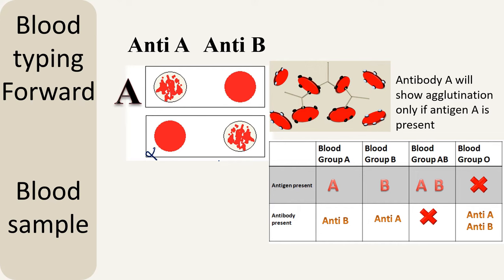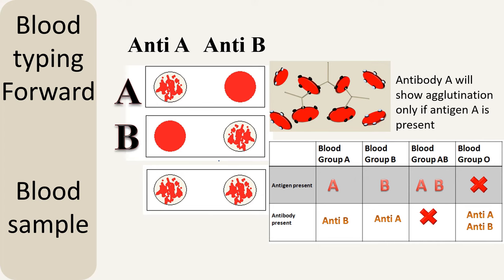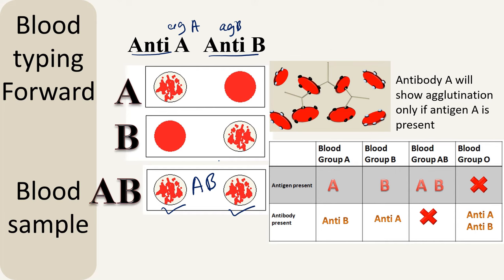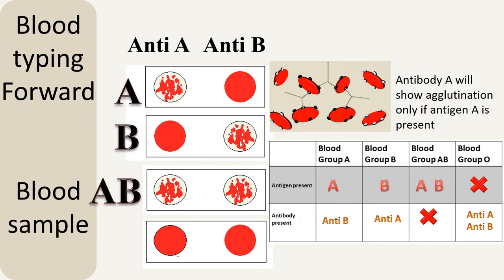Similarly, if there is no agglutination in the presence of antibody A, this means antigen A is absent. And if there is agglutination in the presence of antibody B, this means antigen B is present — so this blood group can be B. In a condition where agglutination is seen for both antibodies, the blood sample contains both antigen A and antigen B, meaning the person is blood group AB. And if you do not see agglutination with either of the two antibodies, the blood sample does not contain antigen A or antigen B, meaning the person has blood group O.